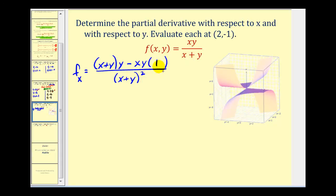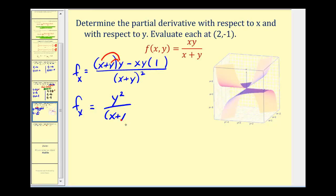Simplifying: distributing gives xy + y squared, then minus xy. The xy terms cancel, leaving y squared over (x + y) squared. Evaluating at the point (2, -1): the numerator is (-1) squared = 1, and the denominator is (2 + (-1)) squared = 1 squared = 1. So the partial with respect to x at (2, -1) is 1.